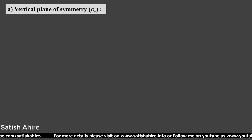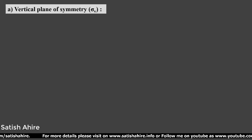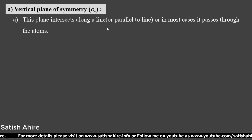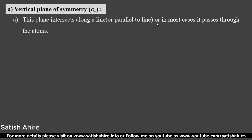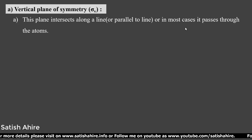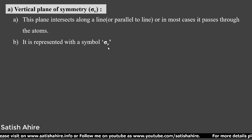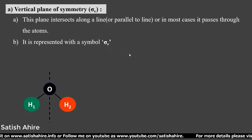Hello friends, today we are going to learn about the vertical plane of symmetry. This plane intersects along a line or is parallel to a line. In most cases it passes through the atoms, and it is represented with the symbol σv.